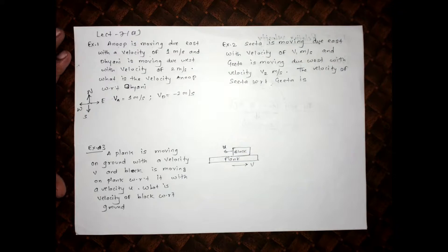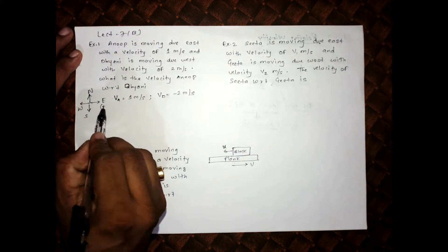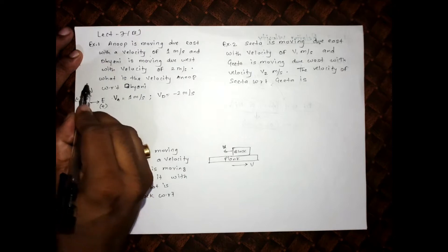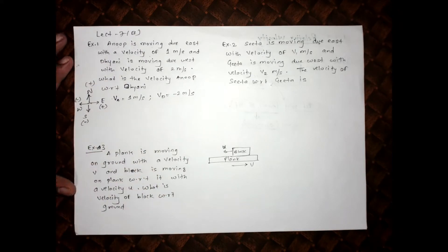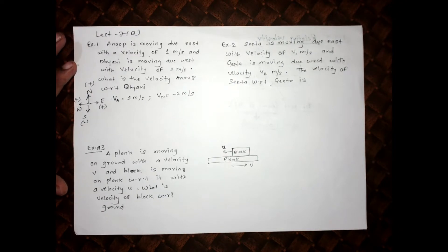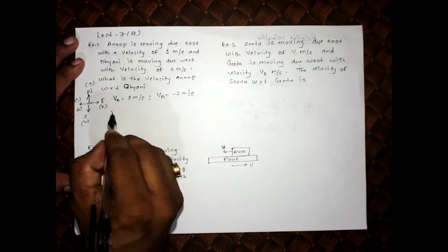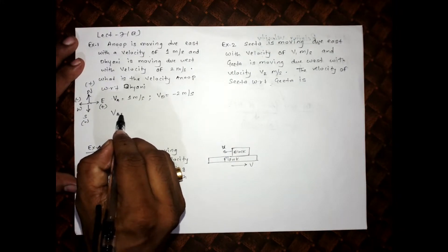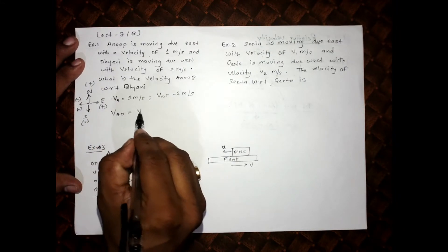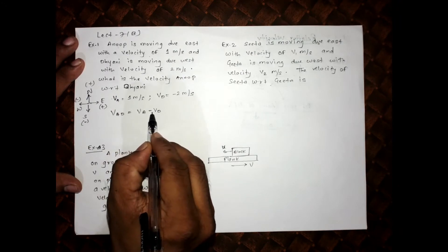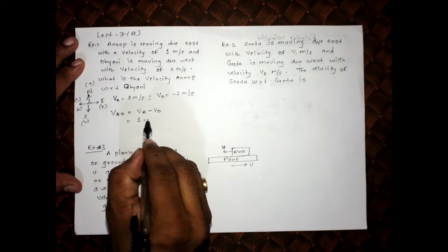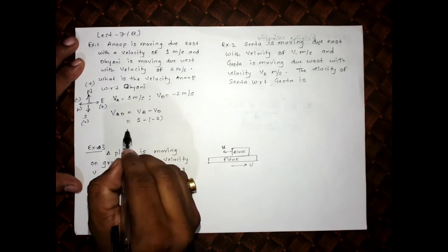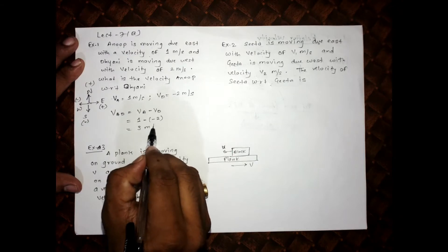You should be sure that east is positive and west is negative, north is positive and south is negative — these are our usual notations. You can change them, but it's best to fix one convention and use it consistently. The formula is: velocity of Anoop with respect to Dhyani equals velocity of Anoop minus velocity of Dhyani, which is 1 minus (−2), giving 3 meter per second.